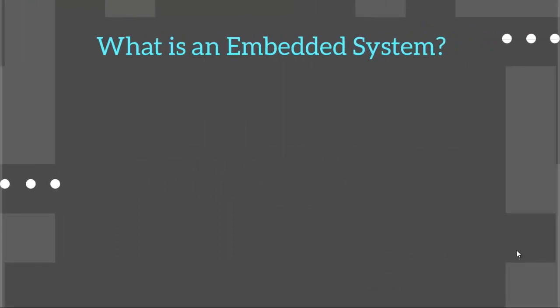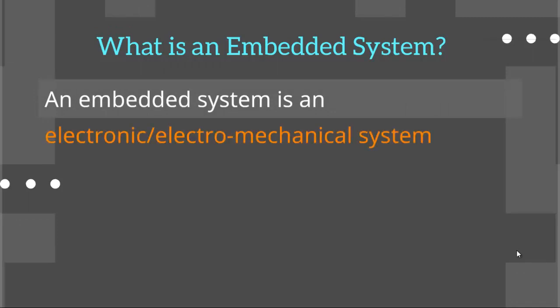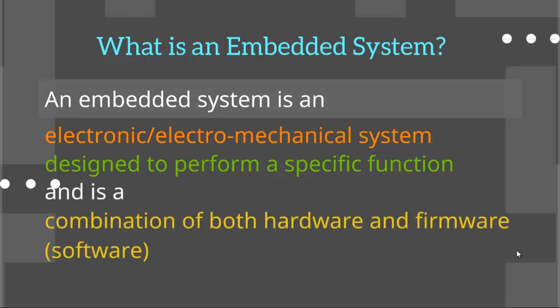So what is an embedded system? An embedded system is an electronic or electromechanical system designed to perform a specific function, and is a combination of both hardware and firmware — it is also called software. It is made of microcontrollers, memory elements, interfaced IOs, sensors and actuators.